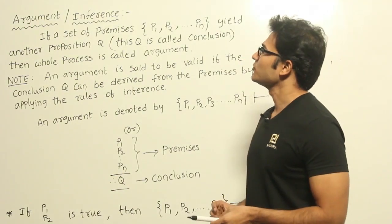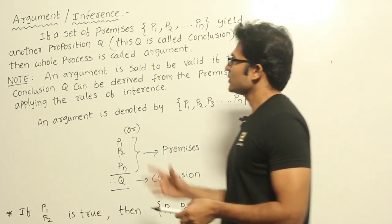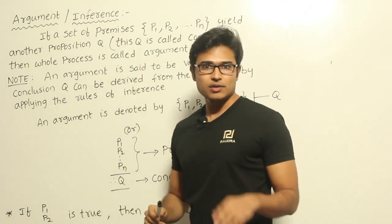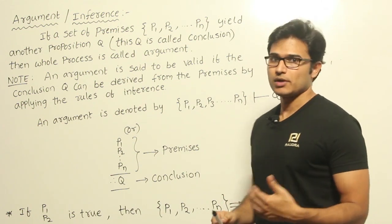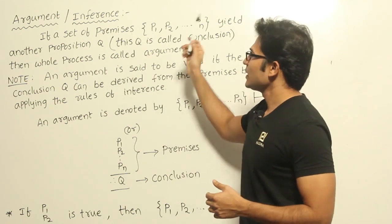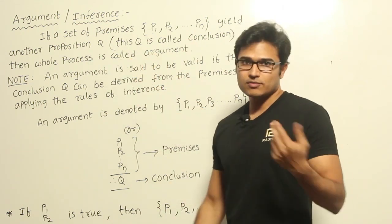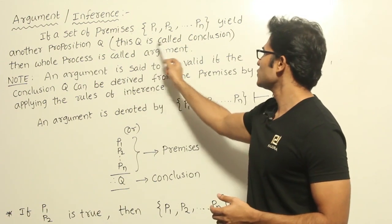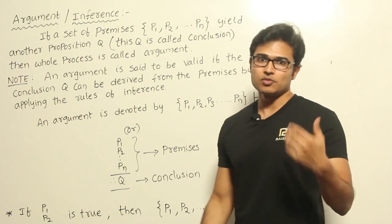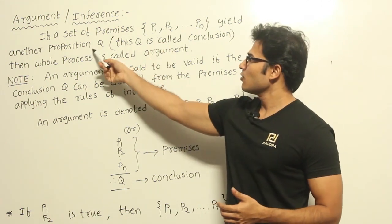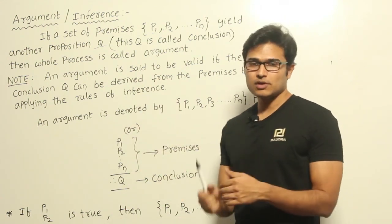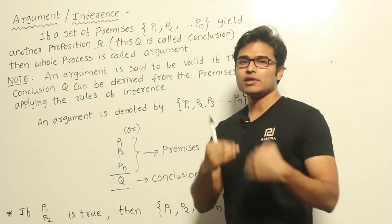Let's look at the topic of arguments and inference. A set of premises — propositions which are assumed to be true — yield another proposition Q. 'Yield' means we derive it. This Q is called the conclusion. If some propositions are given and assumed to be true, and under that assumption you derive one more proposition, the whole process is called an argument.